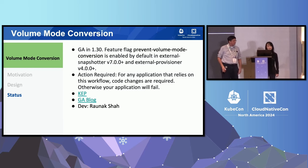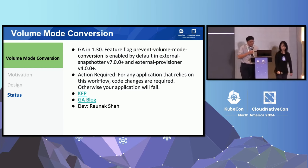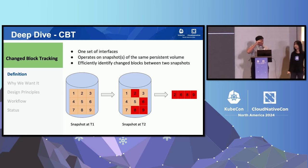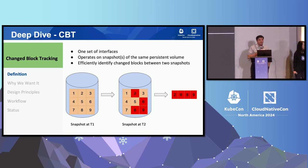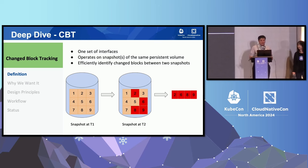Now let me hand it over to Dave, who will talk about CBT. Change block tracking is basically the ability to find out what's happened between two snapshots — which blocks have been changed. For example, we have a snapshot at T1, and then blocks 2, 6, 8, and 9 got changed by the time we came to the second snapshot. By being able to get this data out, we can do a much more efficient backup.